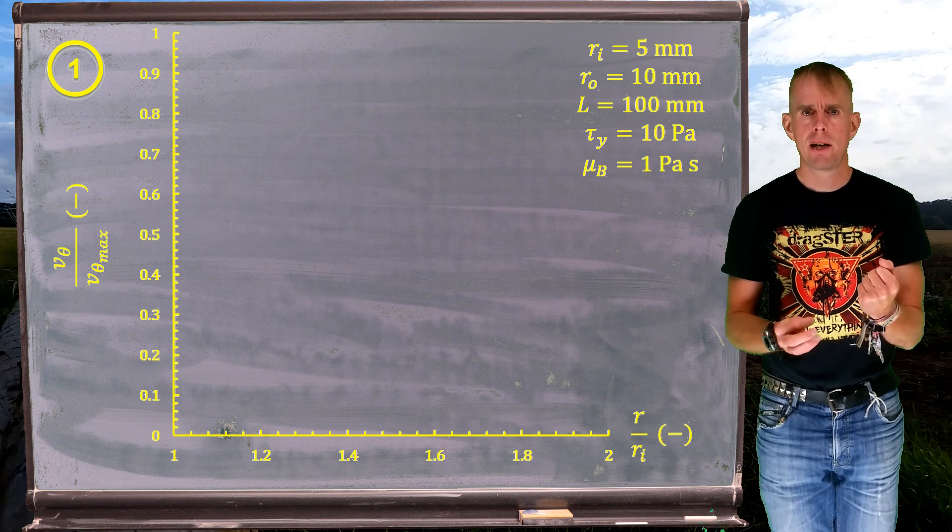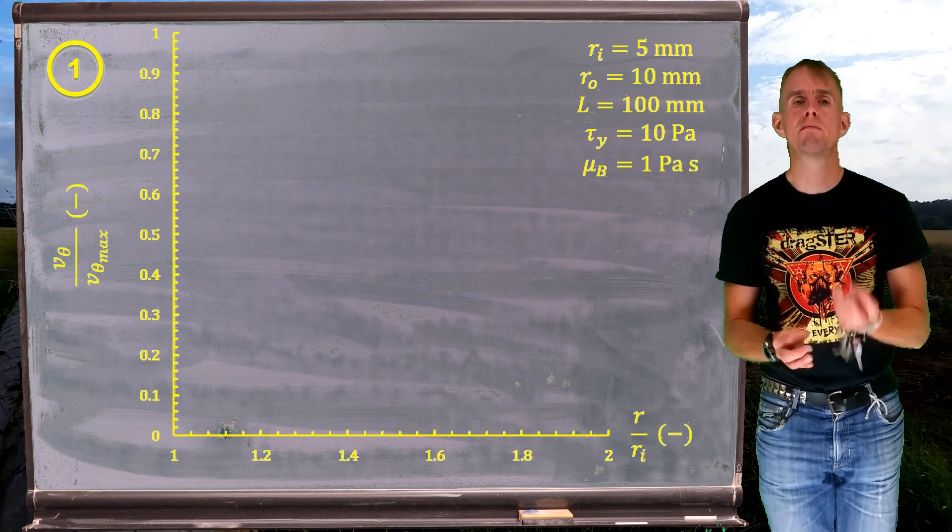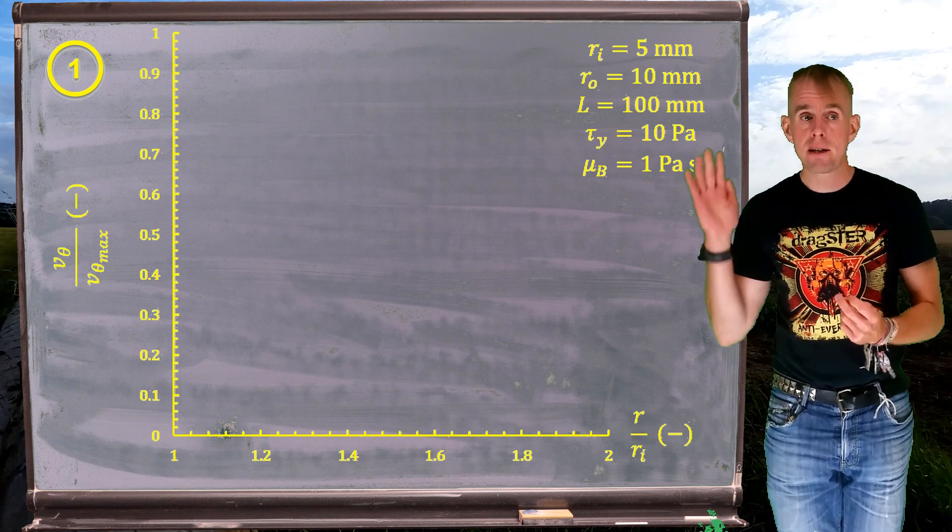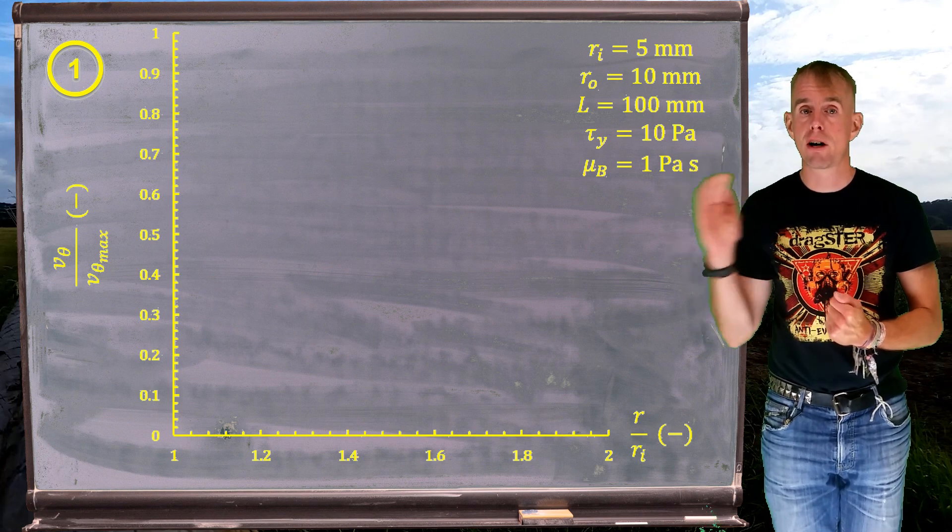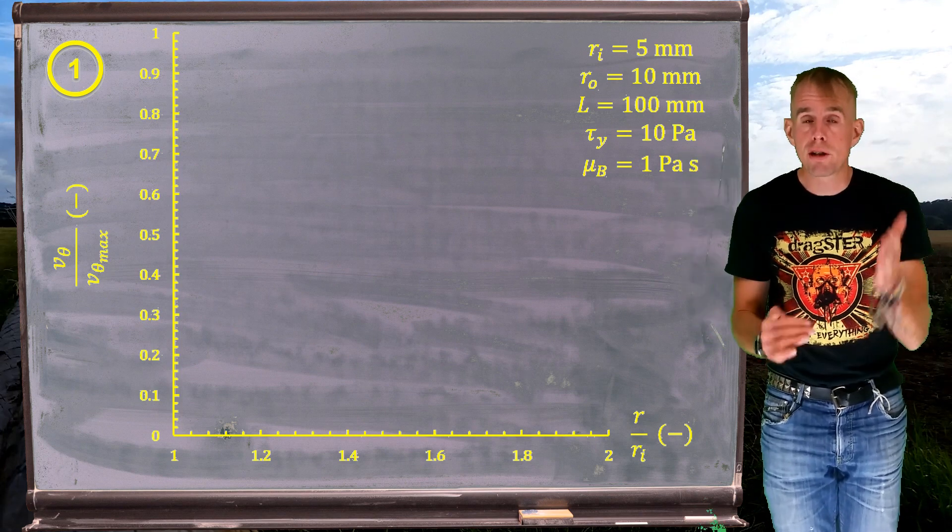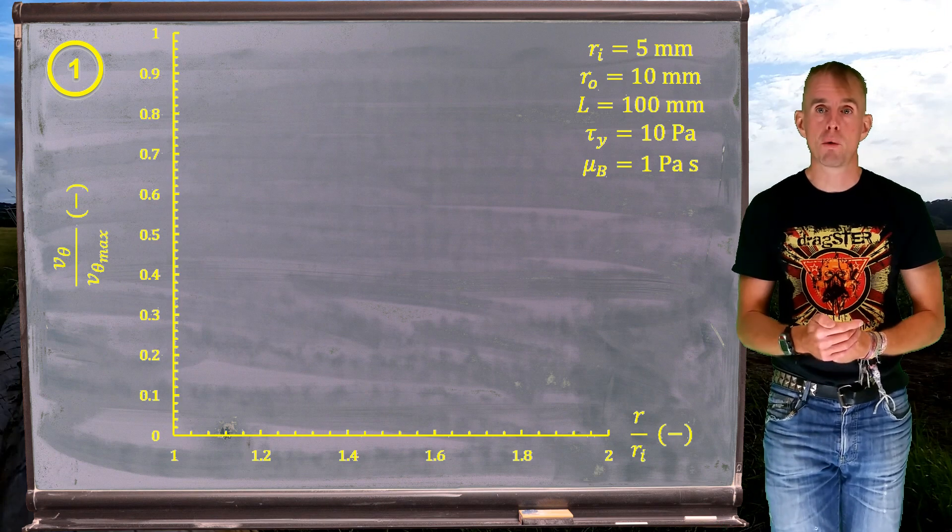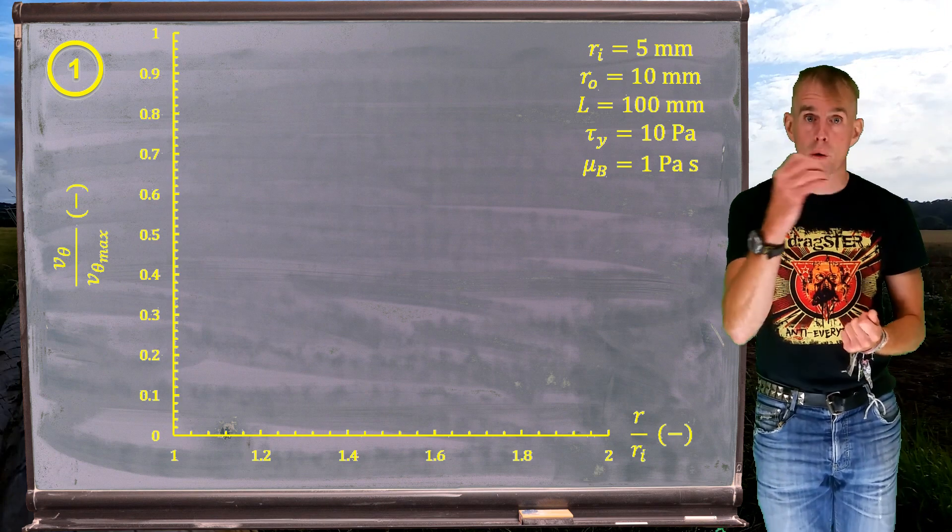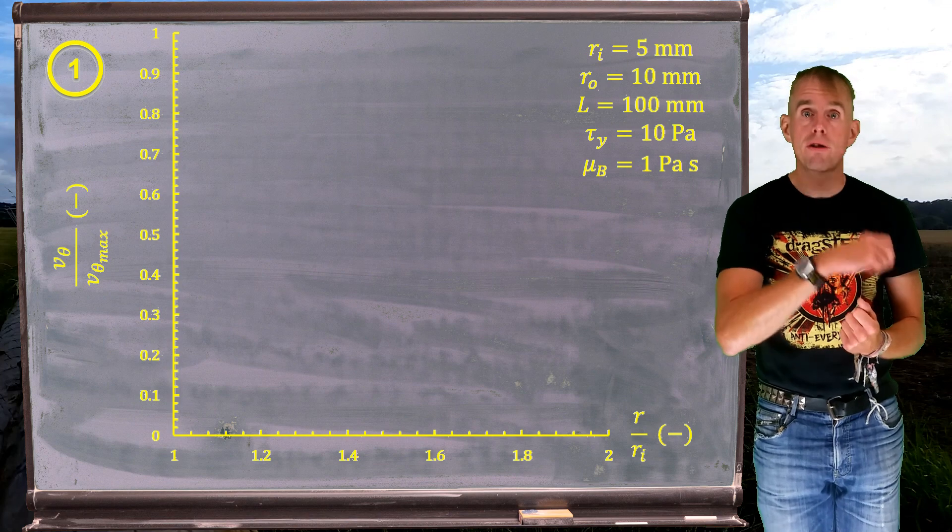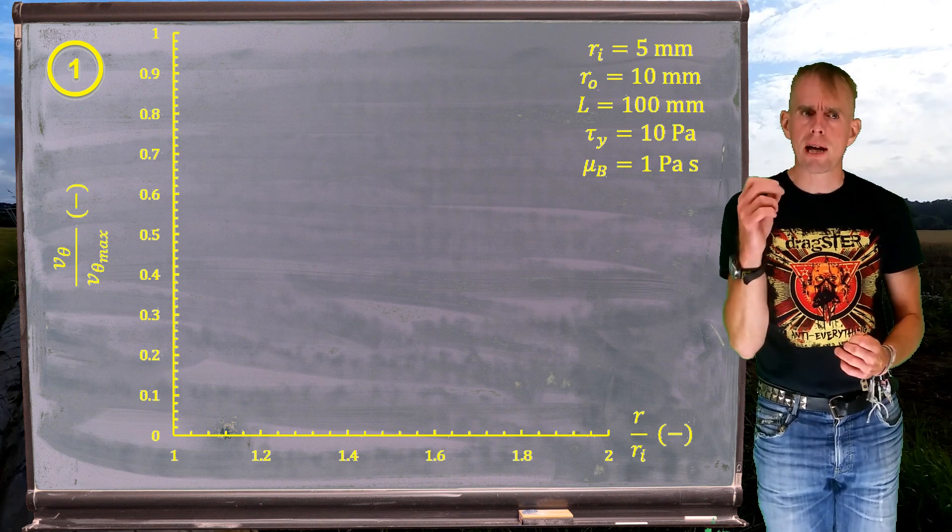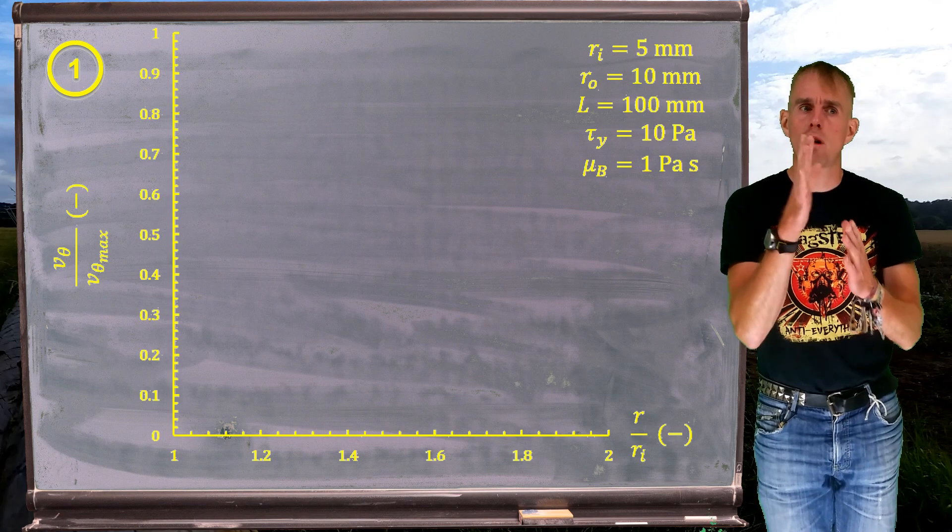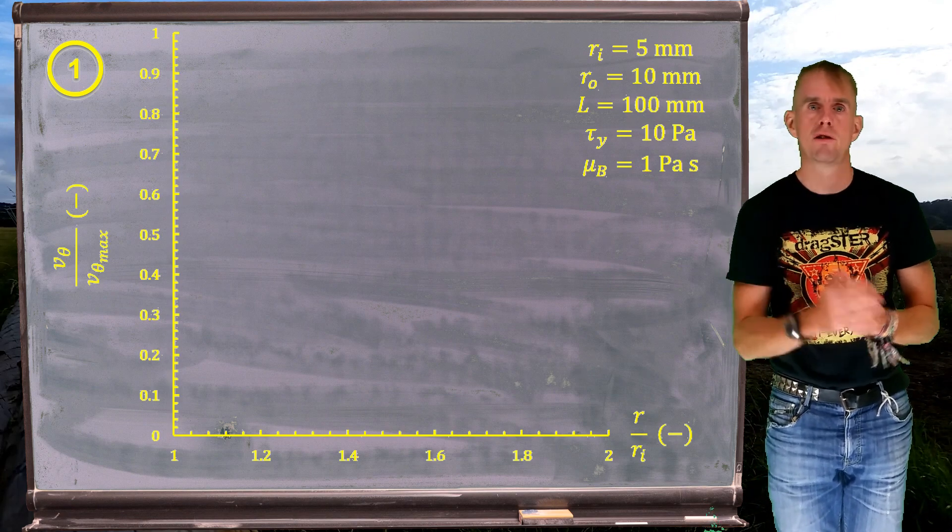What I've done, first of all, is to quickly work out what my minimum torque is. And then I'm going to plot v theta over v theta max, as a function of r over ri, for different multiples of that minimum torque, remembering that the higher the torque gets, the closer the result approaches the Newtonian, which means that the higher the torque gets, we would expect each of these curves to come closer and closer to one another.